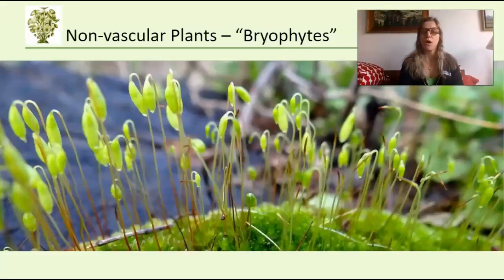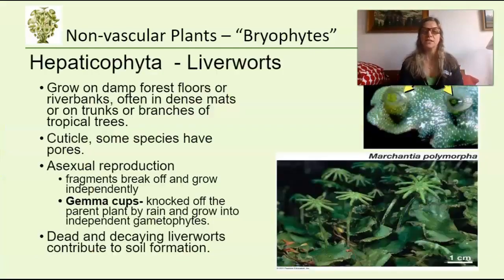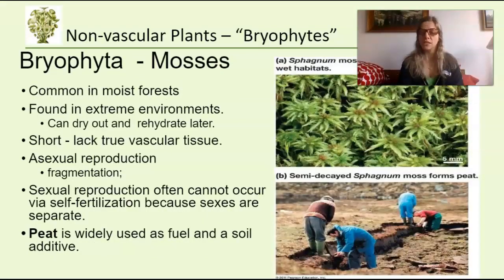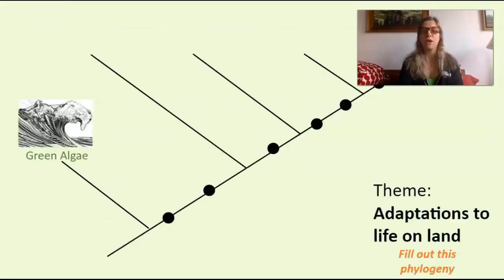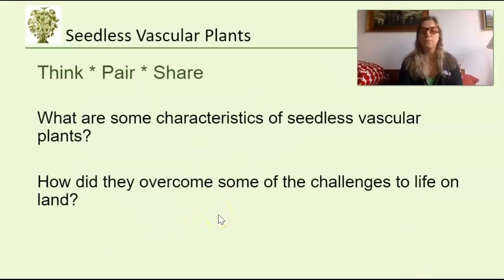From there we'll discuss the different types of bryophytes. Liverworts have some interesting characteristics, including really cool gemma cups that we'll talk about. Then we have mosses, which we'll discuss particularly in relation to alternation of generations. Hornworts are another group you may not have heard of before. Think about where they fit on the phylogeny in terms of adaptations focused on avoiding drying out and the enclosed embryo.